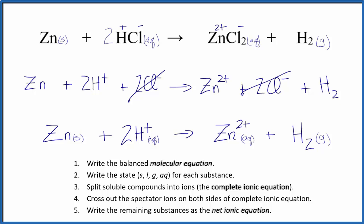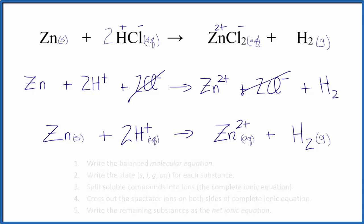This is Dr. B with the net ionic equation for Zn plus HCl, zinc plus hydrochloric acid. Thanks for watching.